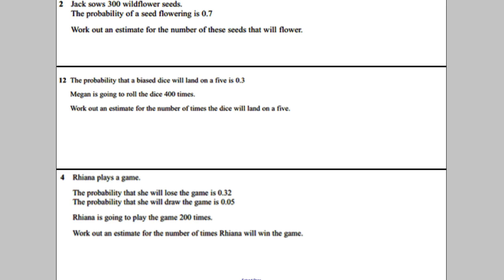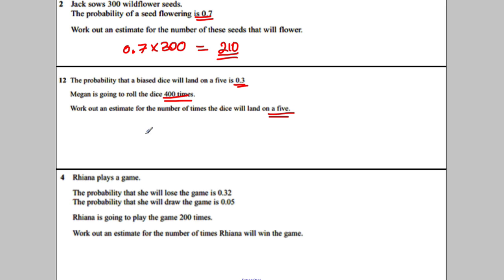Going through the answers now. To estimate the number of seeds that will flower: P = 0.7, so 0.7 × 300 = 210. Next, the probability that a biased die lands on five is 0.3, rolled 400 times: 0.3 × 400 = 120.